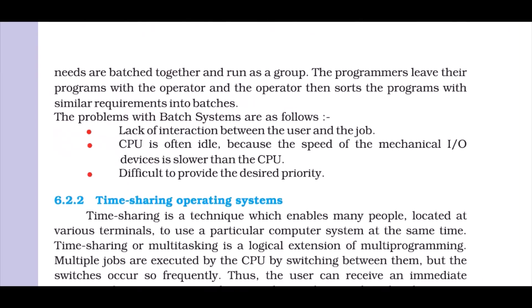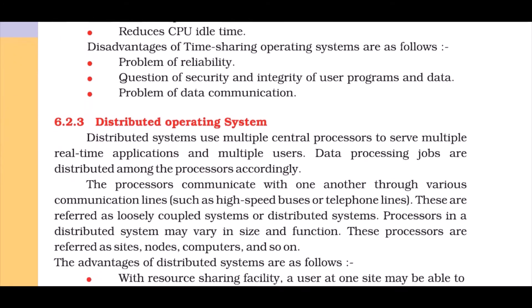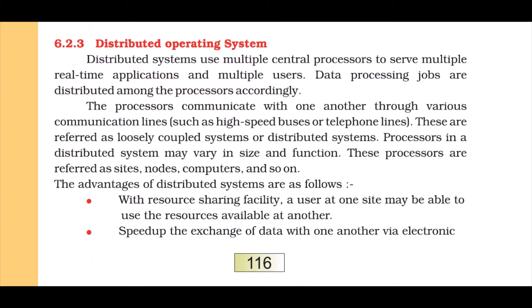Types of Operating System include batch and time sharing. Now we'll talk about what is a Distributed Operating System. Distributed systems use multiple central processors to serve multiple real-time applications and multiple users. There are various data processing jobs that are distributed among the processors accordingly.